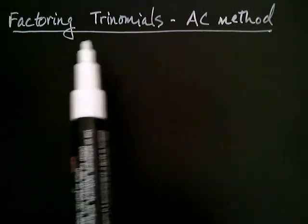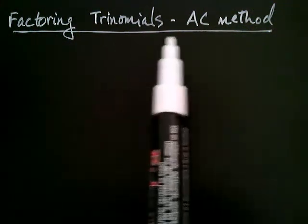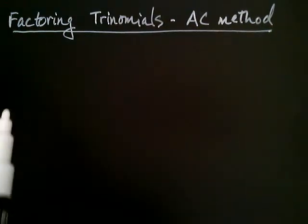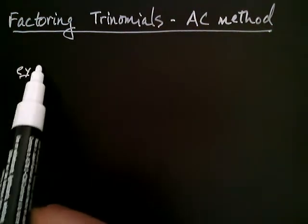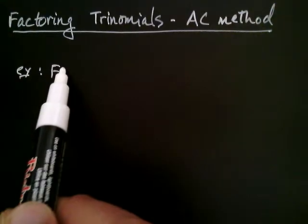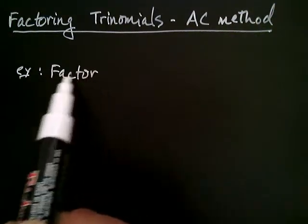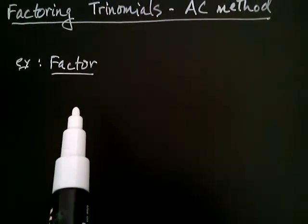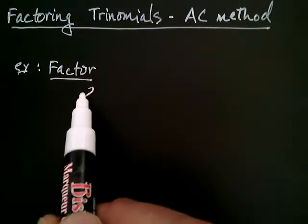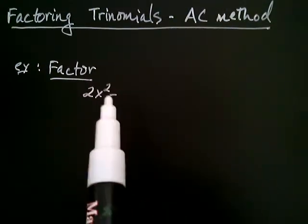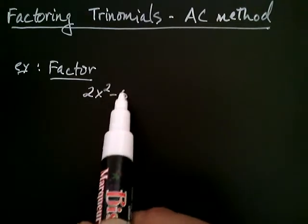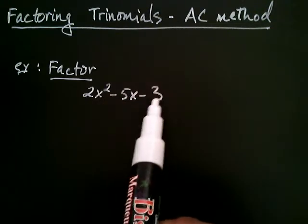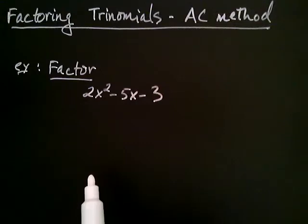In this video, we're going to factor trinomials using what's called the AC method. Let's say, for example, that you wanted to factor, let's say that you had the trinomial 2x² - 5x - 3. How would you factor that?